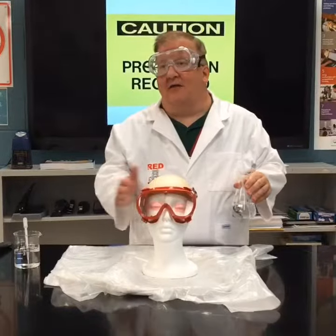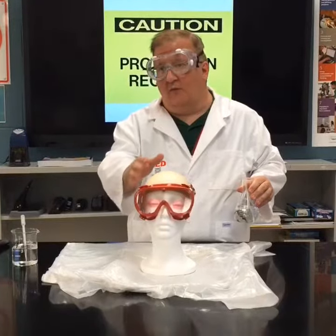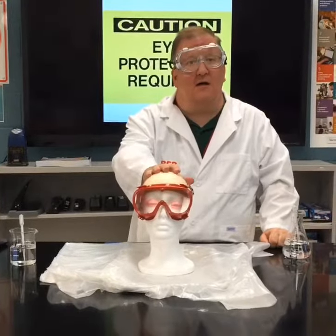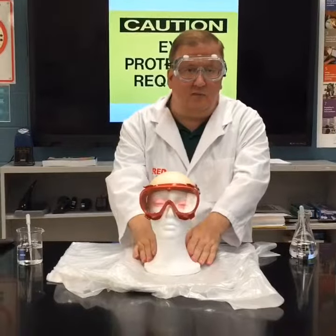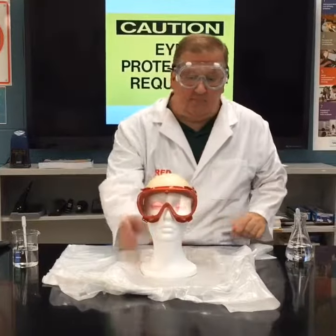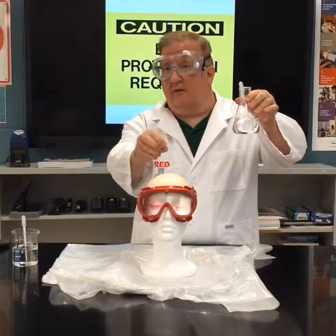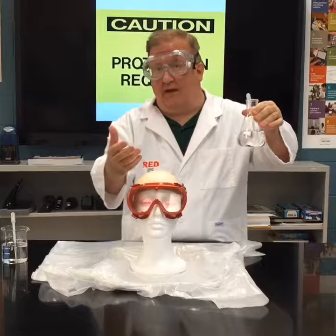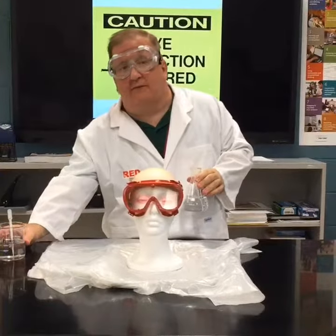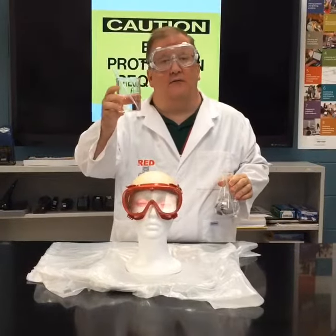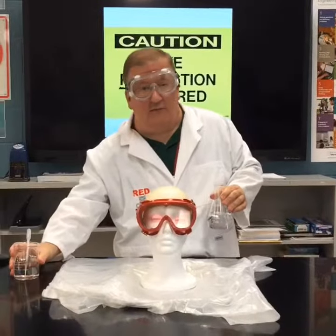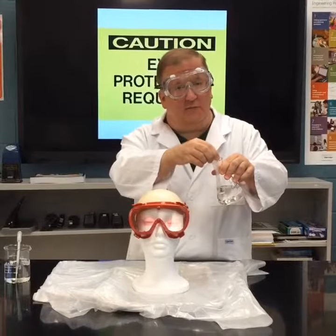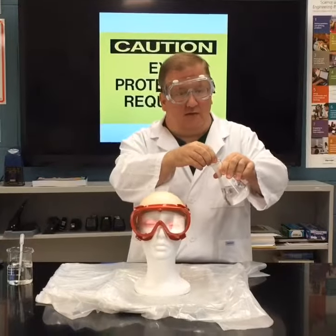This demonstration shows you how different chemicals can react differently according to the substance that they come in contact with. We have the wig cap which is made of nylon, on the mannequin head which is styrofoam. I'm first going to pour a drop of sulfuric acid onto the nylon wig cap, then use some acetone which is a key component of nail polish remover, to demonstrate how different chemicals can react differently according to the material they come in contact with.